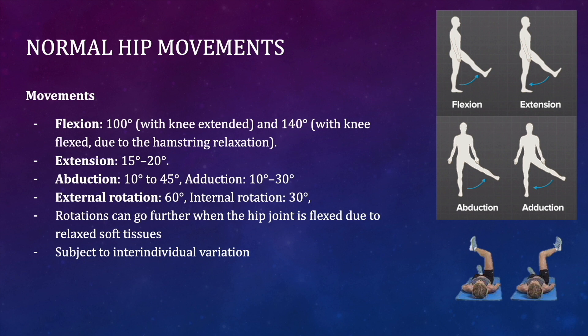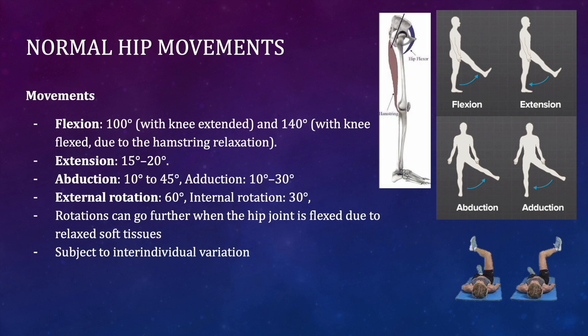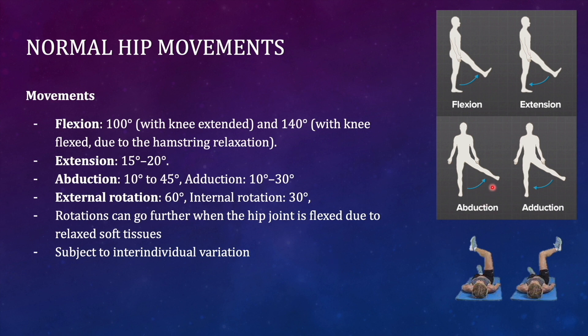Normal hip movements include flexion, extension, abduction, adduction, and external/internal rotation. Flexion is around 100 degrees with the knee extended and 140 degrees when the knee is flexed, because the hamstring muscles need to be relaxed for further flexion. Extension is around 15–20 degrees, abduction 10–45 degrees, adduction 10–30 degrees, external rotation 60 degrees, and internal rotation 30 degrees. Rotations are limited in extension because the hip capsule is taut, while flexion relaxes the capsule allowing more rotation.